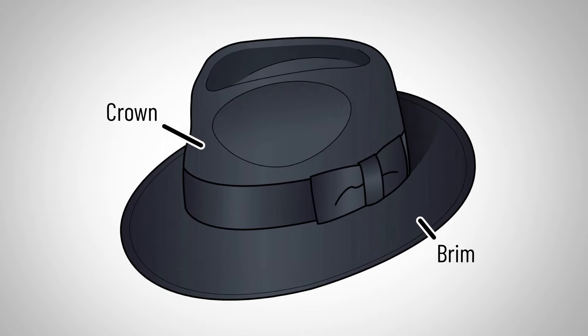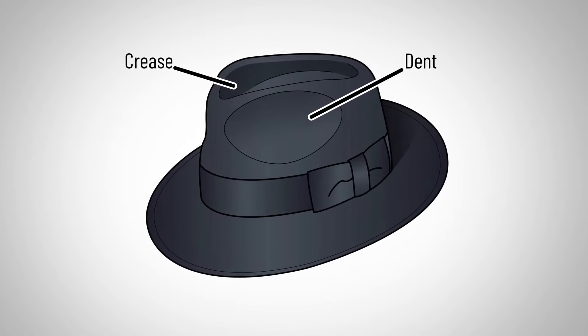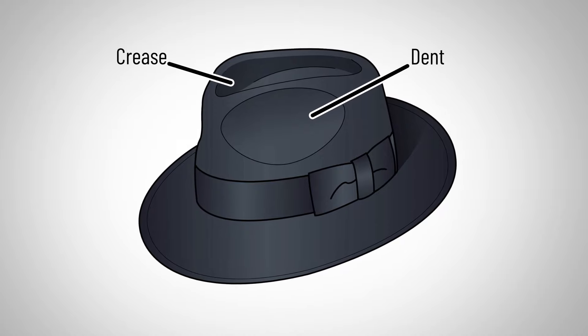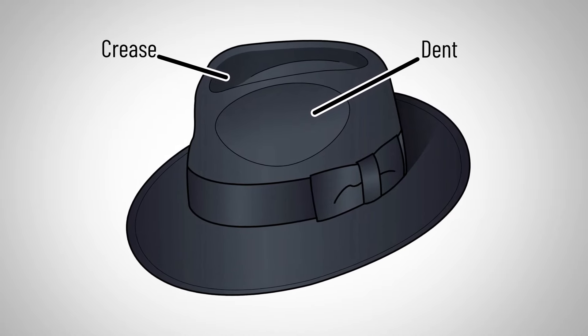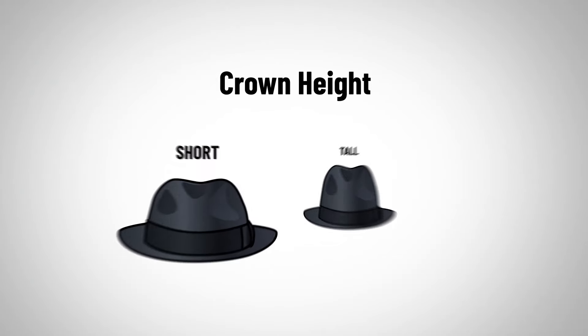The shape is going to be defined by the crease, which goes right here on the top of the hat, and also the dent. The dent goes on the side of the crown. Depending on the shape of the crease and the dent, we get a wide variety of different crowns.